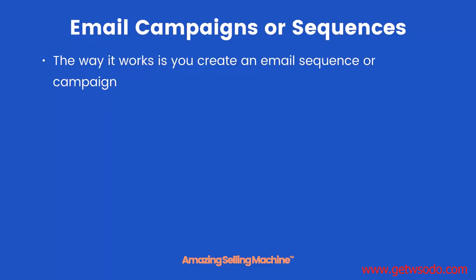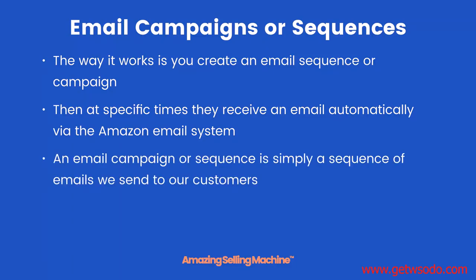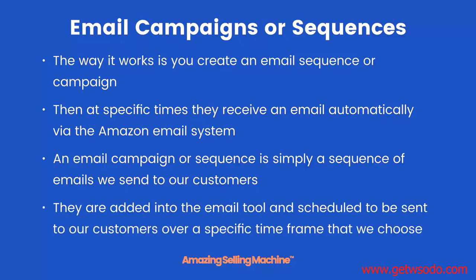The way it works is you create an email sequence or campaign. Then at specific times your customers receive an email automatically via the Amazon email system. An email campaign or sequence is simply a sequence of emails we send to our customers. They are added into the email tool and scheduled to be sent to our customers over a specific time frame that we choose.